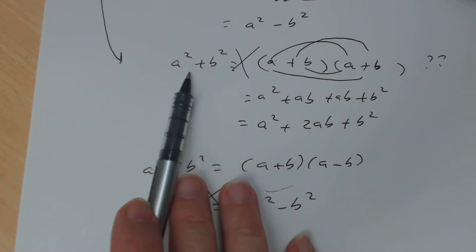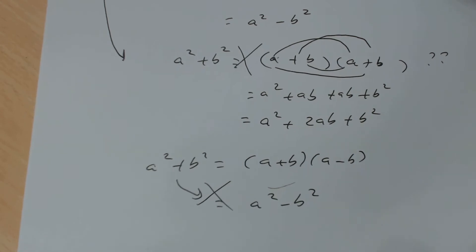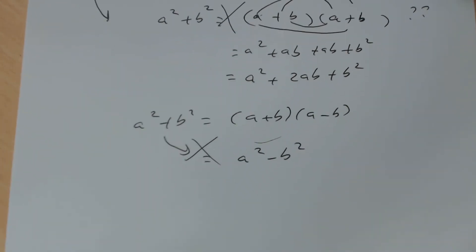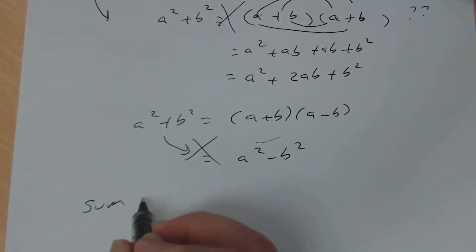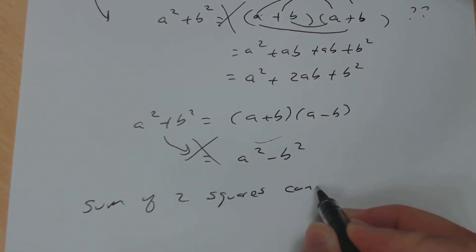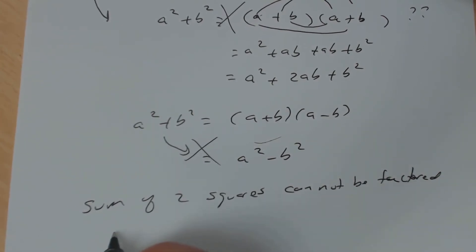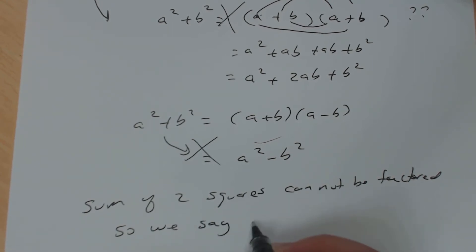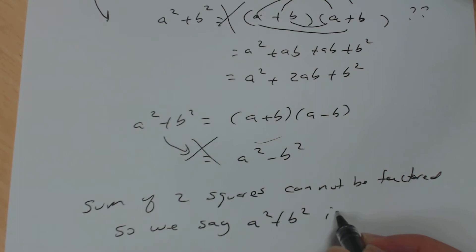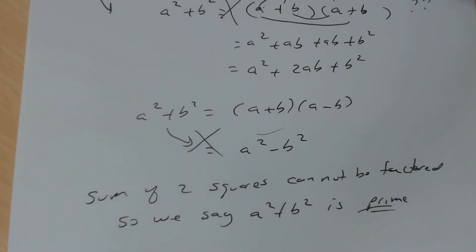No matter what you try, there's no way to factor the sum of two squares as a product of two binomials. So we say that the sum of two squares cannot be factored — we say that a² + b² is prime.